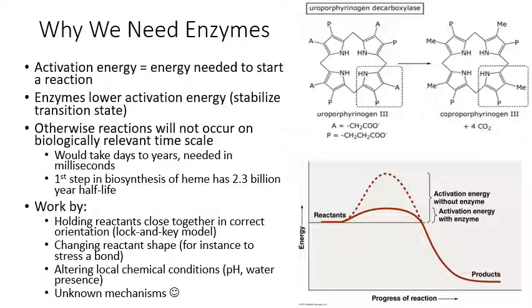There are a few different ways that enzymes are able to stabilize the transition state and lower activation energy. First, an enzyme grabs the reactants as substrates and holds them close together in the right orientation. The reactants that need to react together are usually substrates for the enzyme, so the enzyme grabs them at its active site and makes sure they are held close together and in just the perfect orientation so the atoms that need to make a bond are right next to each other. That theory of how enzymes work by holding things in the right position is called the lock and key model of enzyme activity.